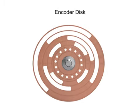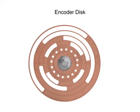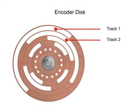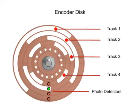The encoder disk consists of a series of opaque and transparent tracks mounted to a rotating shaft. The tracks of the disk are arranged concentrically around the center of the shaft. Photo detectors assigned to each track designate the resolution of the encoder. The higher the number of concentric tracks, the higher the accuracy.